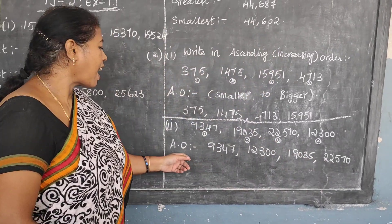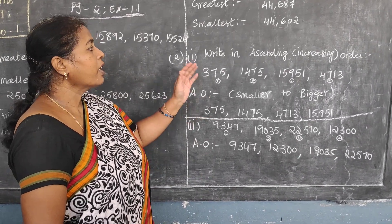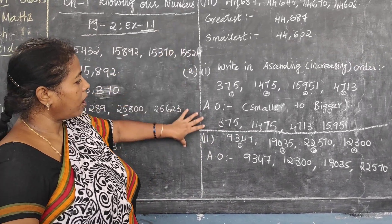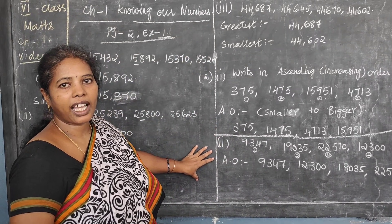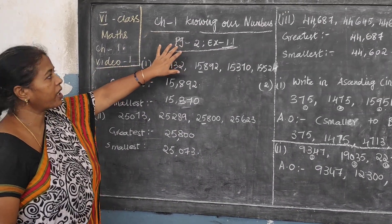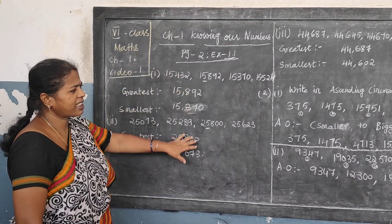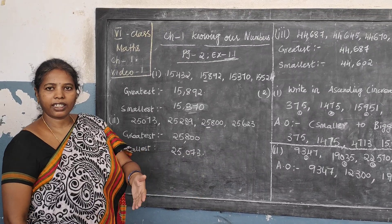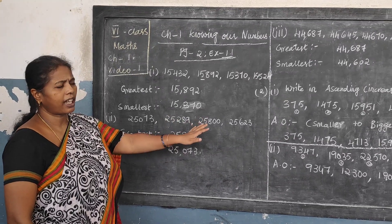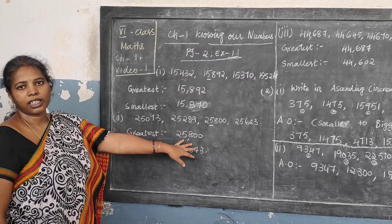So this is the ascending order — also called increasing order. Ascending order: you should write from smaller number to bigger number. Just copy all these. If you have your classwork, put chapter 1, 'Knowing Our Numbers,' page 2, exercise 1.1, video 1. Copy everything as you have done in classwork — same as how I am teaching through online.